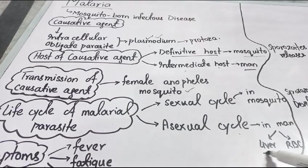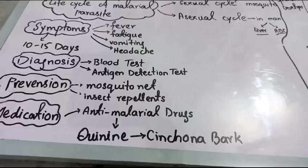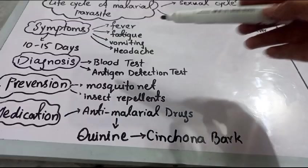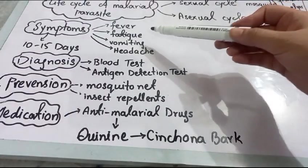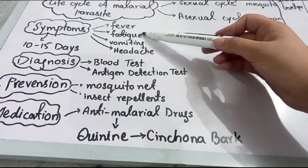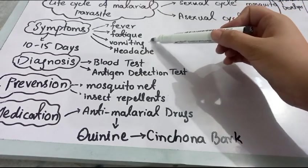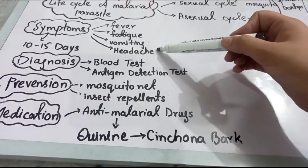The first location of the malaria parasite is the liver — it will occur inside the liver. The second location is the red blood cells. Some symptoms of malaria include fever, fatigue, tiredness, and vomiting, and you will feel headache.